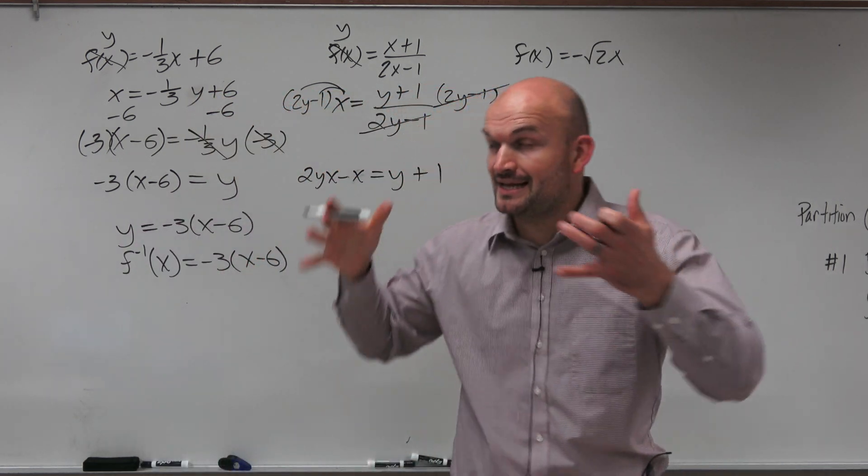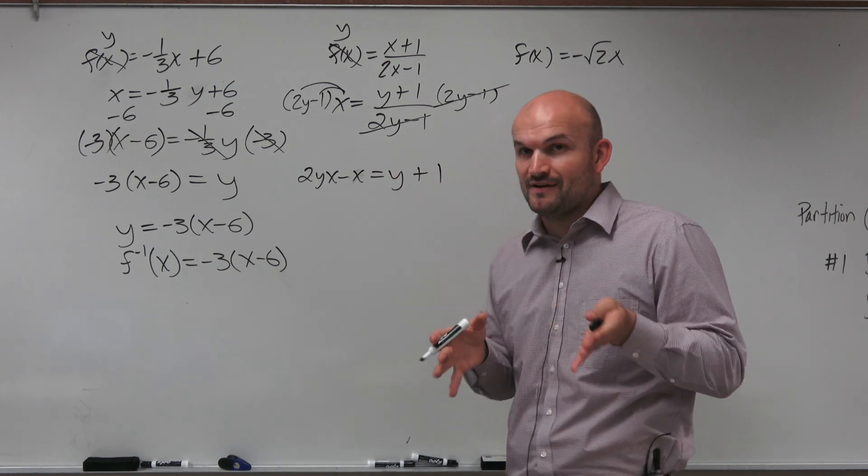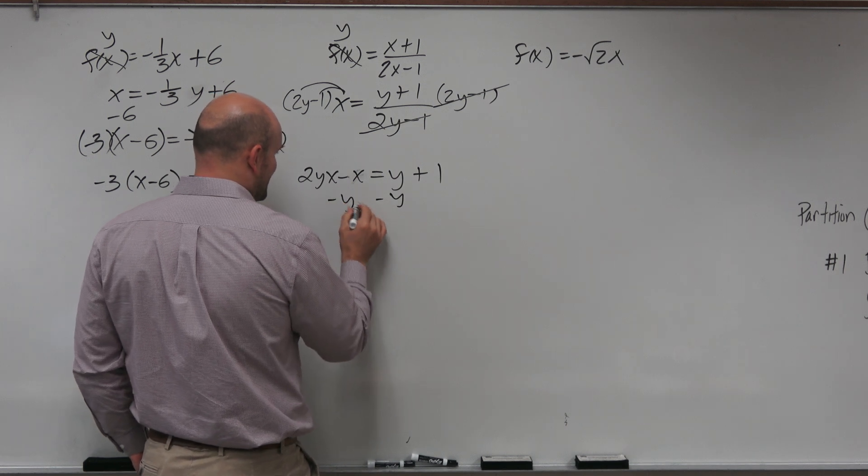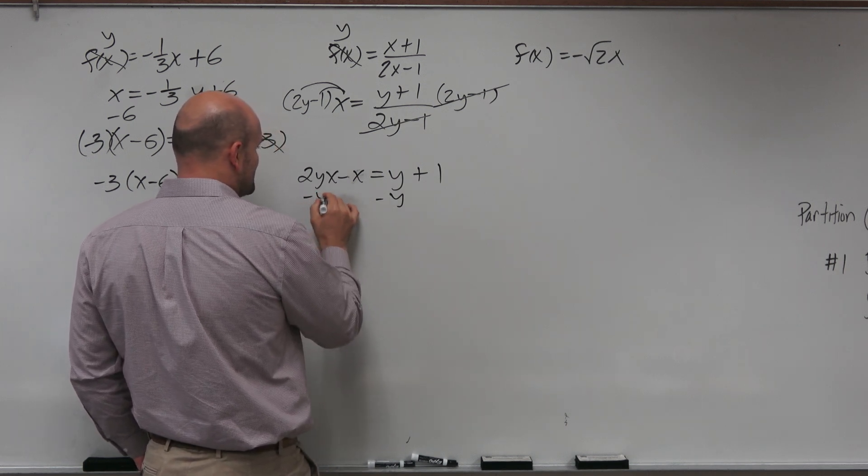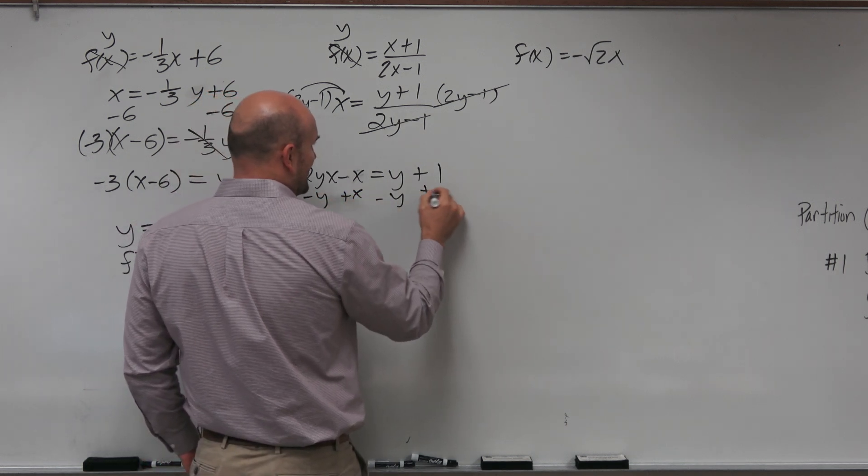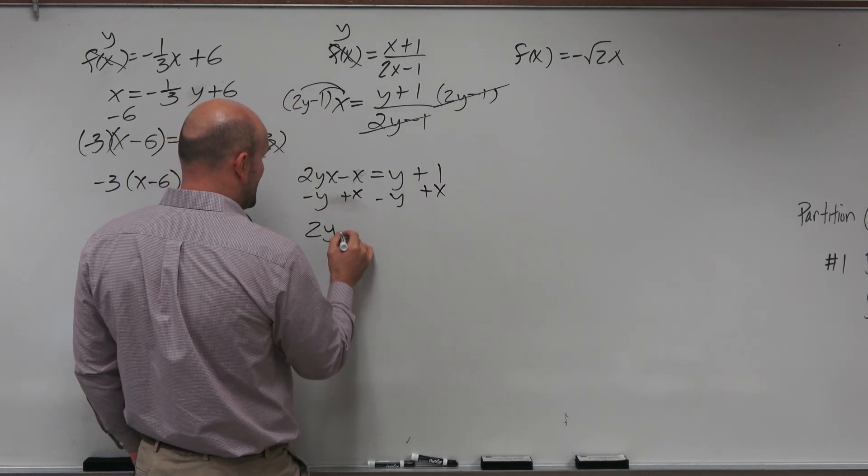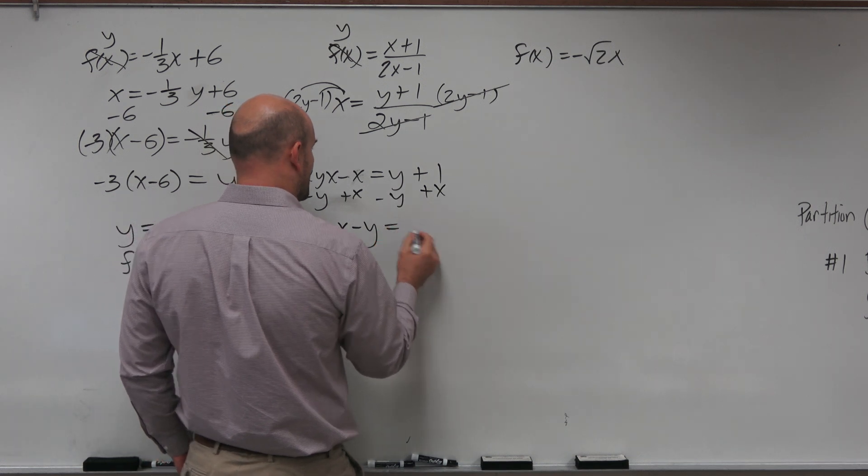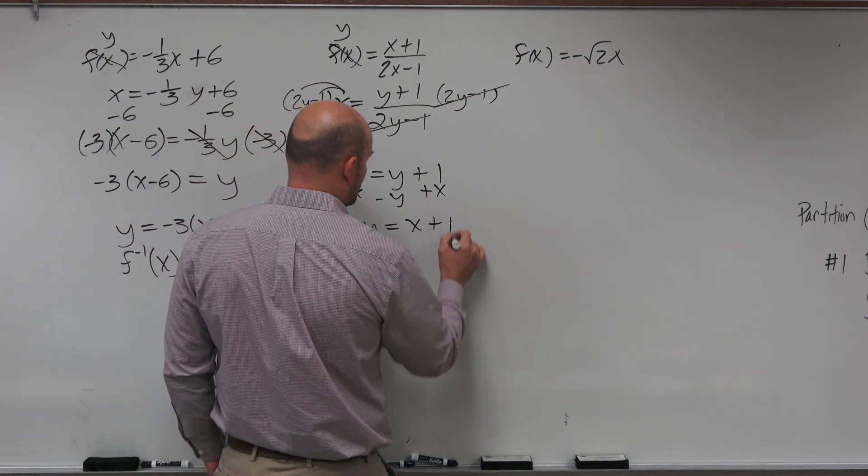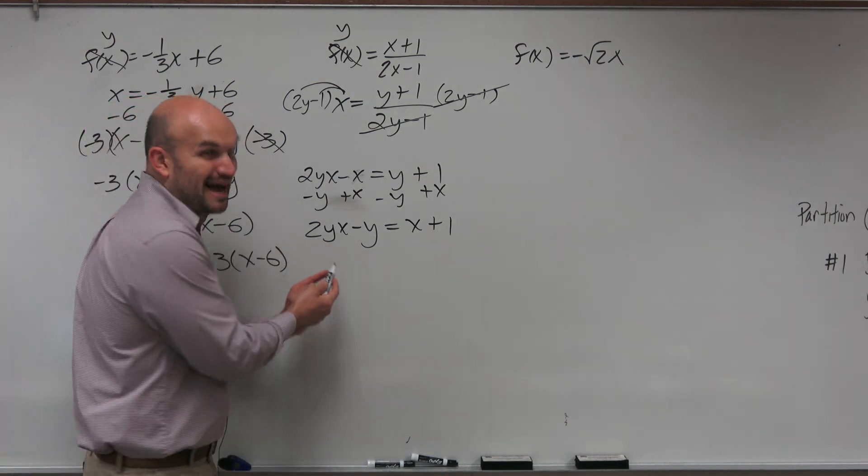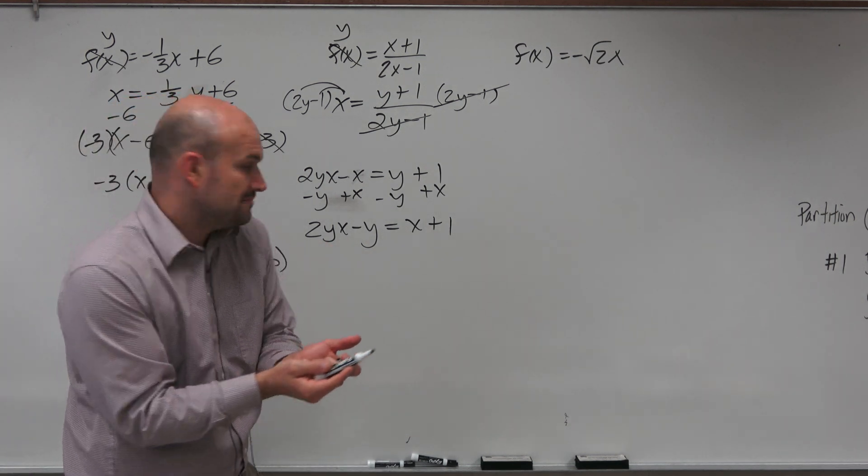All right, so now we have a variable on both sides. And if you recall, we can only solve a variable when they're on the same side. So the other mistake that students will make here is they will try to combine like terms here. Or they get stuck. They either make something up. So we have 2yx minus y is equal to x plus 1. So there's a lot of mistakes that students will make here. One, they'll try to combine these. They're not like terms, so you can't combine them.